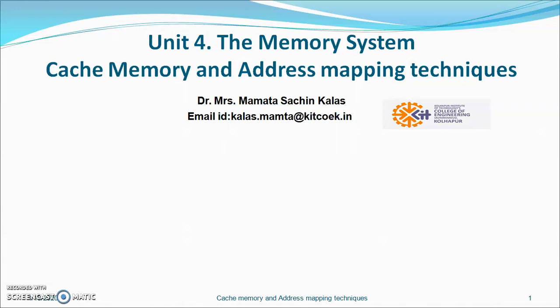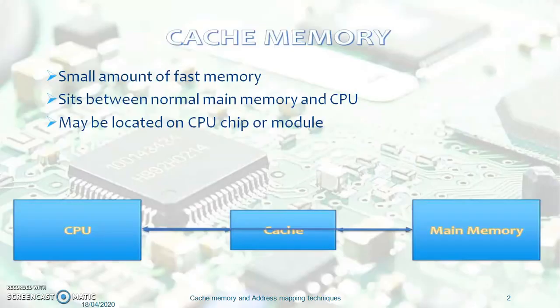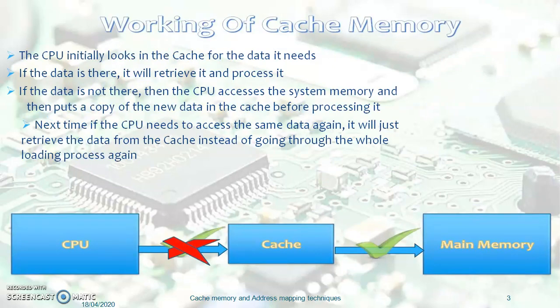Cache memory is the fastest memory compared to the main memory. It is placed in between the CPU and main memory — a small amount of fast memory that sits between the normal main memory and CPU. It may be located on the CPU chip or module. The CPU initially looks in the cache for the data it needs. If the data is there, it will retrieve it and process it. If data is not there, then the CPU accesses the system memory and puts a copy of the new data in the cache before processing.